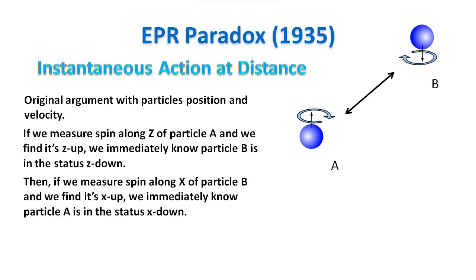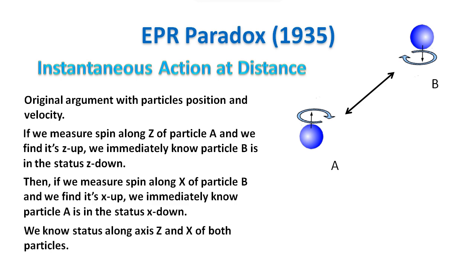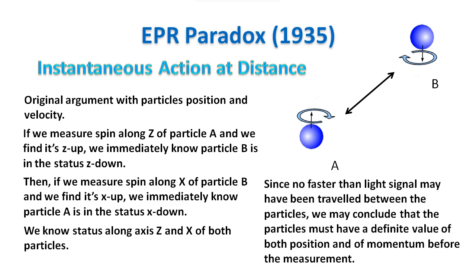Then, if we measure spin along x of particle B and we find it is x-up, we immediately know particle A's spin is in state x-down. In this way, we know the spin of both particles along the z and x-axis, which are incompatible observables. Since no faster-than-light signal may have traveled between the particles, we may conclude that the particles must have a definite value of both spin components before the measurement. This is the theory of hidden variables.